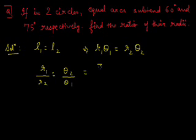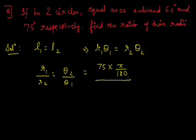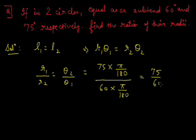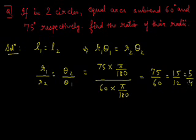Theta2 is 75 degrees and theta1 is 60 degrees. Converting both to radians: 75 into pi by 180 and 60 into pi by 180. The pi by 180 cancels, leaving 75 upon 60, which simplifies to 15 upon 12, and further to 5 by 4. So the ratio of their radii R1 to R2 is 5 by 4.